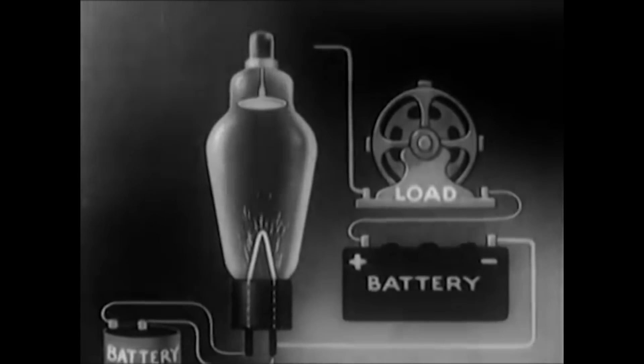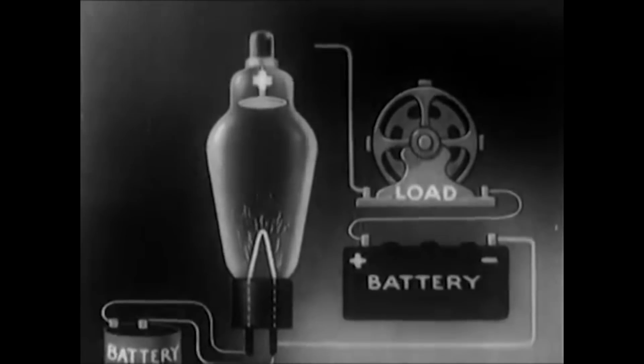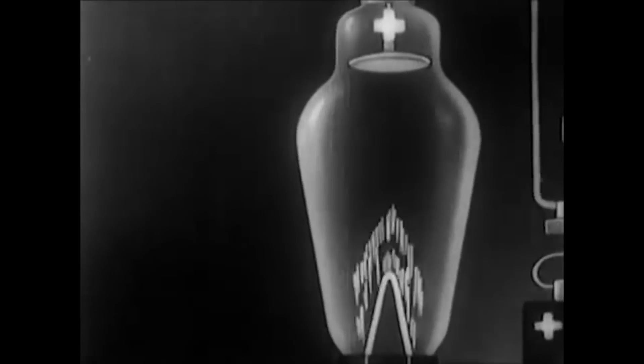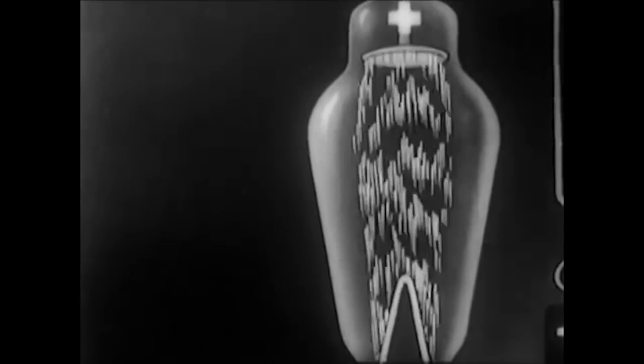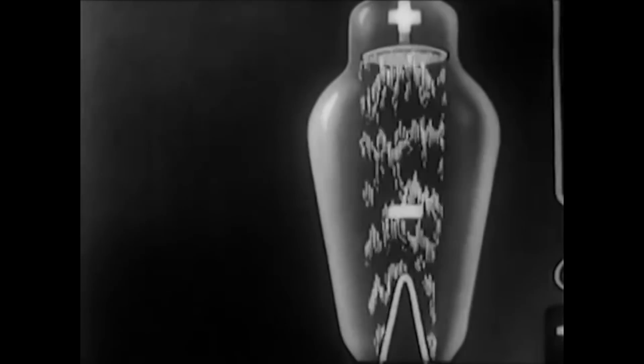And when that power source turned on, something called thermo-ionic emission would occur, and electrons, as the heater element would heat up, would send electrons to the anode. Essentially, by controlling the heater element, you could control the flow of electrons.